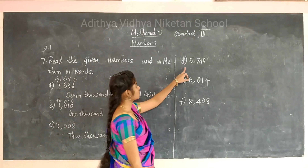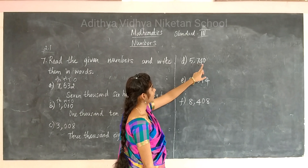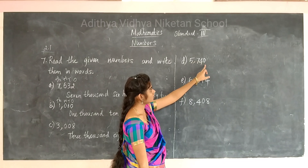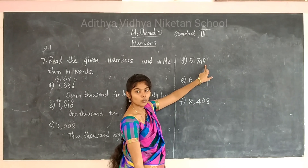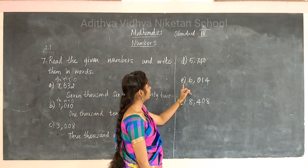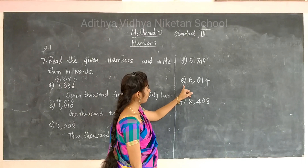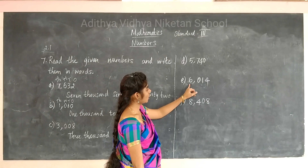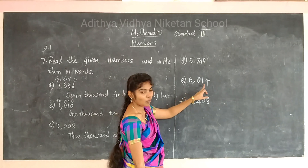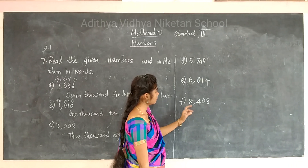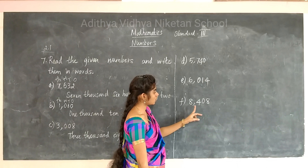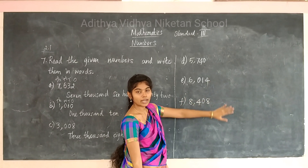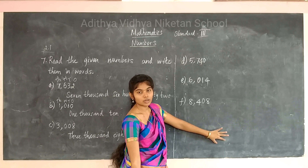The next number is 5740 — read it and write it in words. Then number six is 6014 — read and write in words. The next is 8408 — write this in words as well.